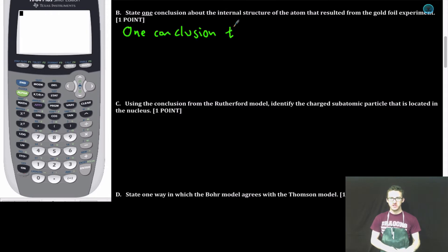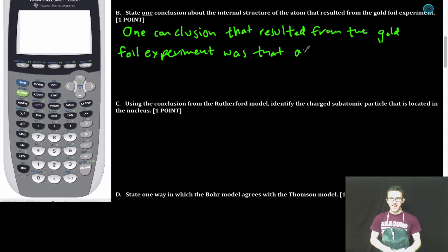One conclusion that resulted from the gold foil experiment was that an atom has a small, positively charged nucleus.